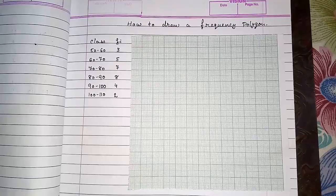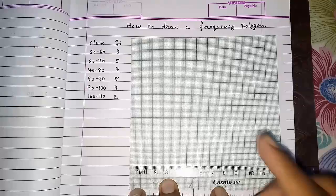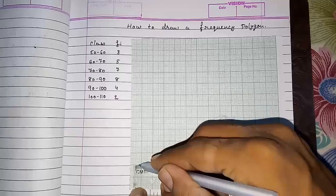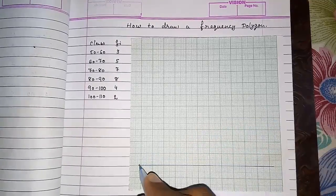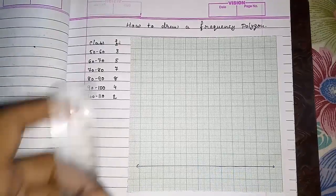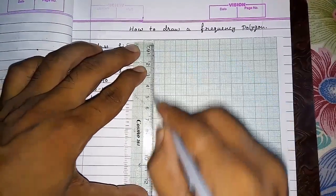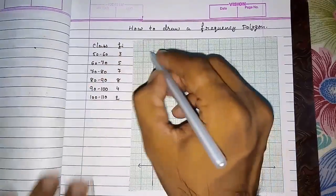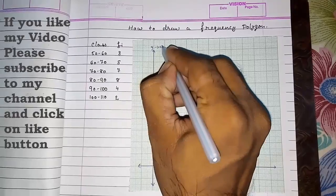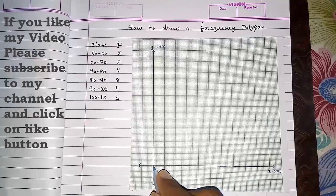So what we have to do, as we were doing in histogram, the same thing: first we have to draw the x-axis. I'm drawing it with pen, you have to use pencil only. I am using pen because with pencil you will not be able to see what I am doing. So I am using pen, you have to use pencil. Keep in mind that this is our y-axis, and this will be our x-axis, and this point is called origin.